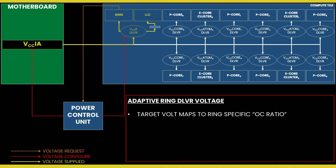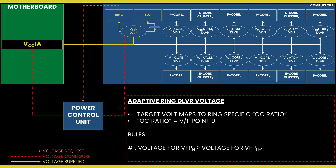We can configure override and adaptive modes directly in the PCU by specifying a target voltage and a voltage offset for each mode. In adaptive mode, the target voltage is mapped to the ring's OC ratio, which also matches ring VF point 9. You can configure the adaptive voltage and the OC ratio to any value. However, multiple rules enforce what ratio and voltage is actually set. Rule number one: the voltage set for a given VF point N must be higher than or equal to the voltage set for VF point N minus 1. In the case of the ring, it means the voltage for the OC ratio must be higher than or equal to the voltage for VF point 8. This can be a little bit strange because you can program the OC ratio to any value, including lower than 40x.